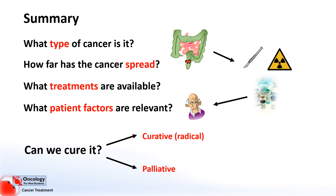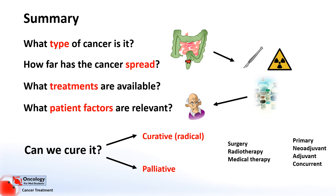Appropriate treatments are selected — these might be surgery, radiotherapy, or medical therapy. Then the order is decided: is that therapy going to be used as the main therapy (primary therapy), or before (neoadjuvant), after (adjuvant), or at the same time (concurrent).